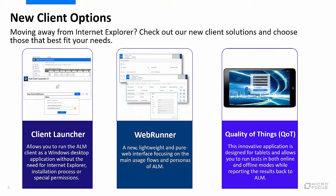In ALM 15, we also introduced ALM Web Runner. This is a lightweight and pure web interface for ALM that covers most of the common operations. Using this interface, you can access ALM from any browser and operating system. The last client introduced in the last couple of years is the ALM Quality of Things, an application suitable for tablets that helps customers who have a need for testing offline, collecting results, keeping track of them, and uploading to ALM once they get back online.